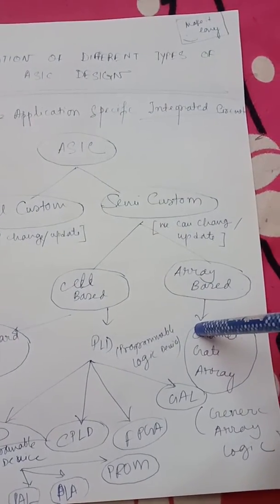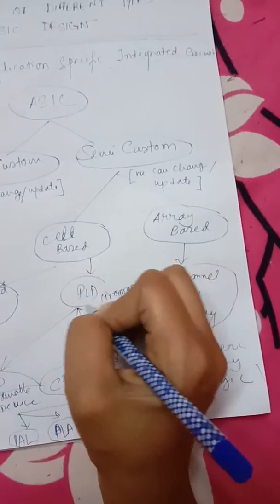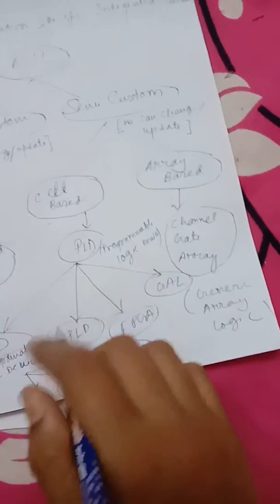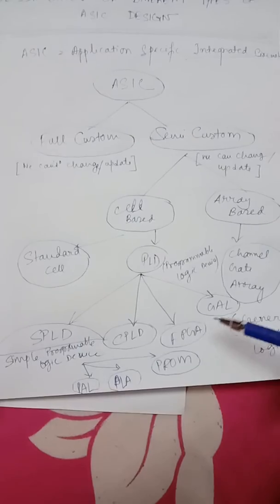The Array-Based design is the Channel Gate Array type. The Cell-Based design is in two parts: Standard Cell and PLD. The PLD is classified into four parts: SPLD, CPLD, FPGA, and GAL.